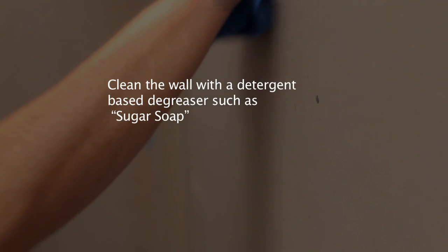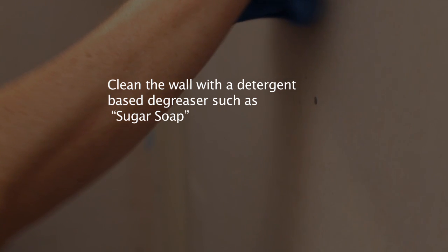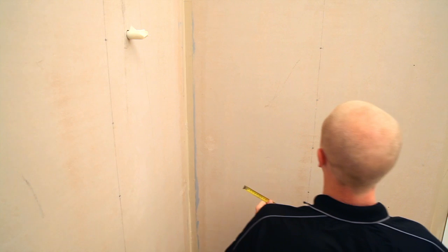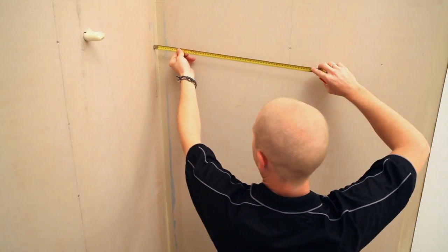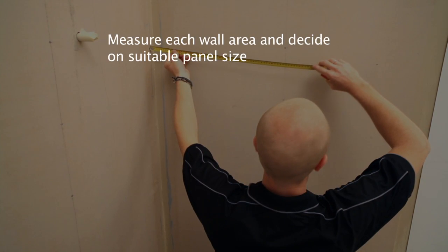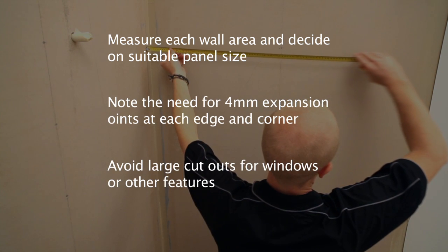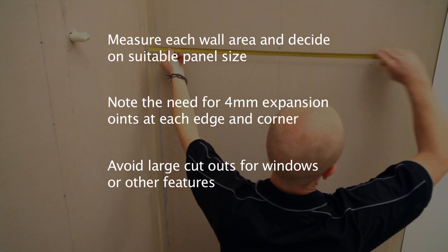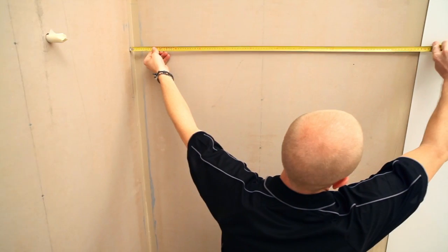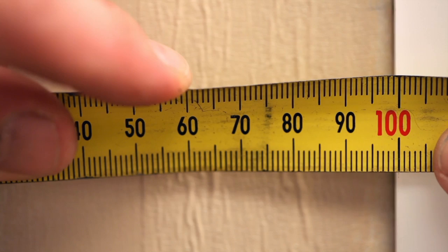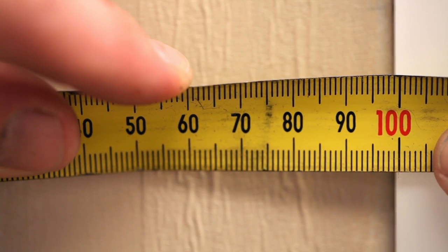Ensure the walls are smooth, clean and dry, and that all substrate wall panel fixings are set flush or recessed. Once all the preparation for the installation of the panel has been completed, measure each wall area and decide on suitable panel size. Remember to allow for 4mm joints or expansion gaps at each corner between Xenolite Plus panels, and also at any other wall edge.